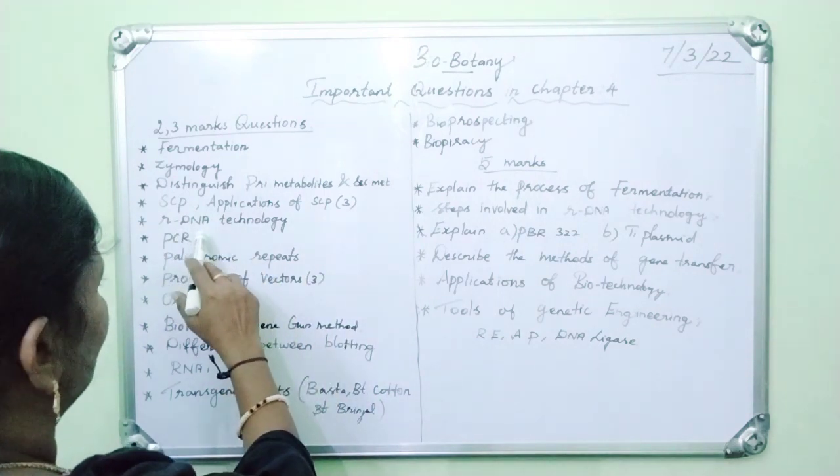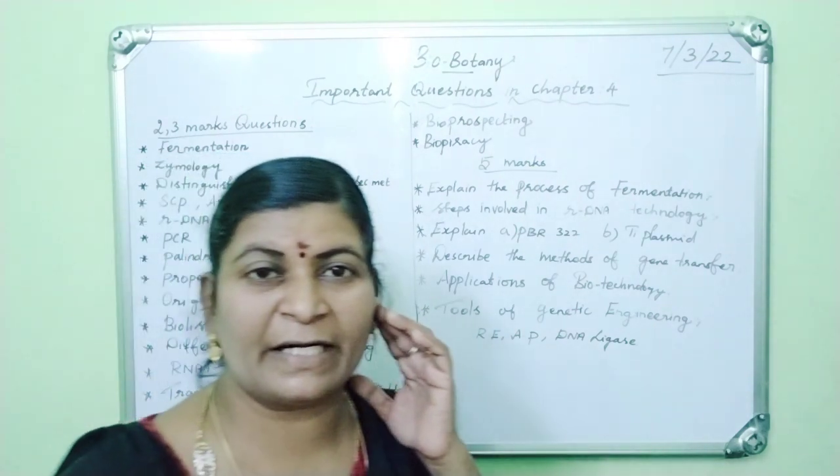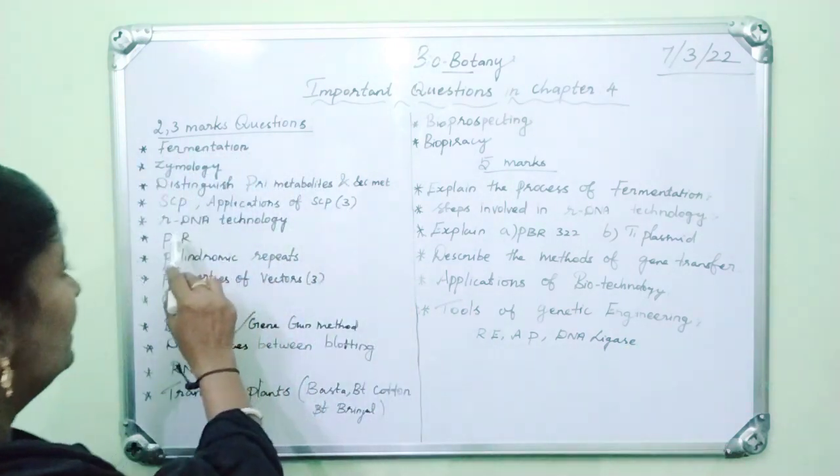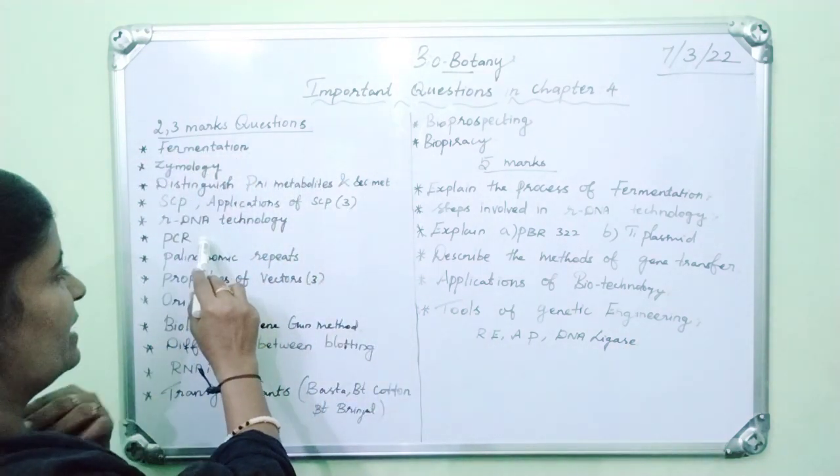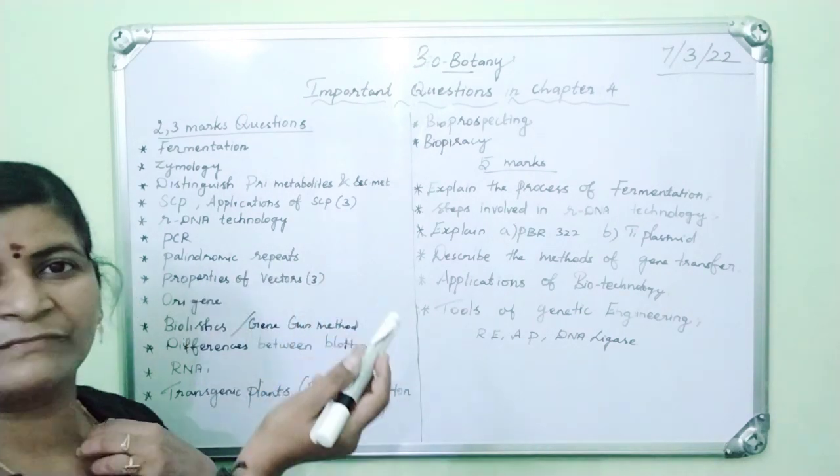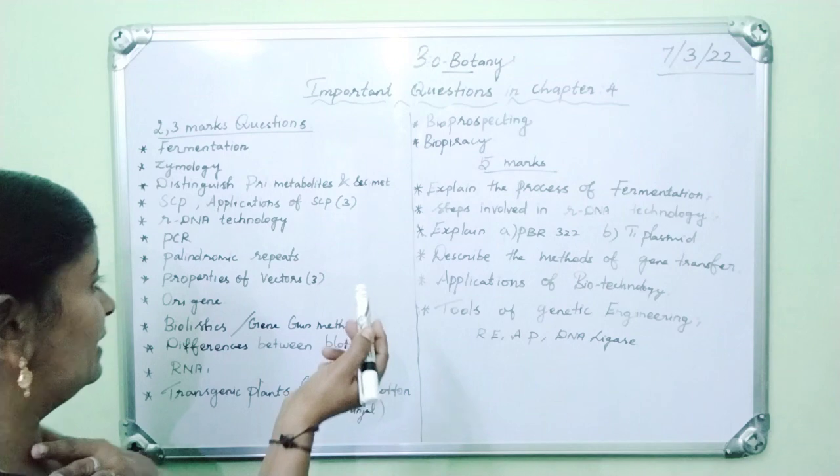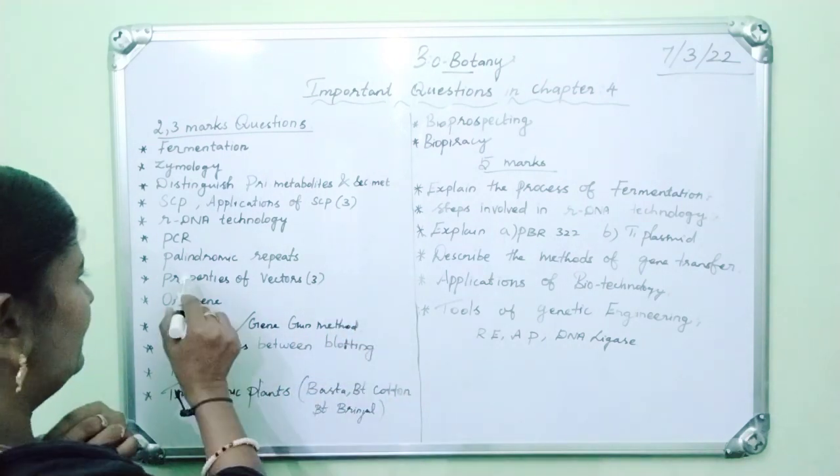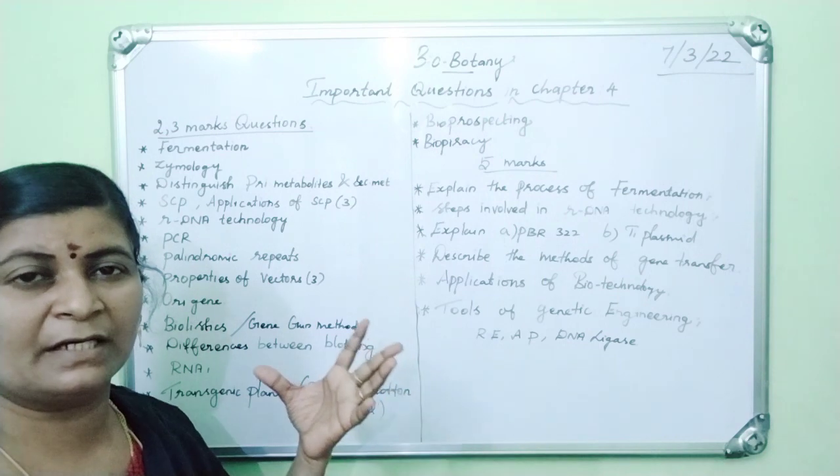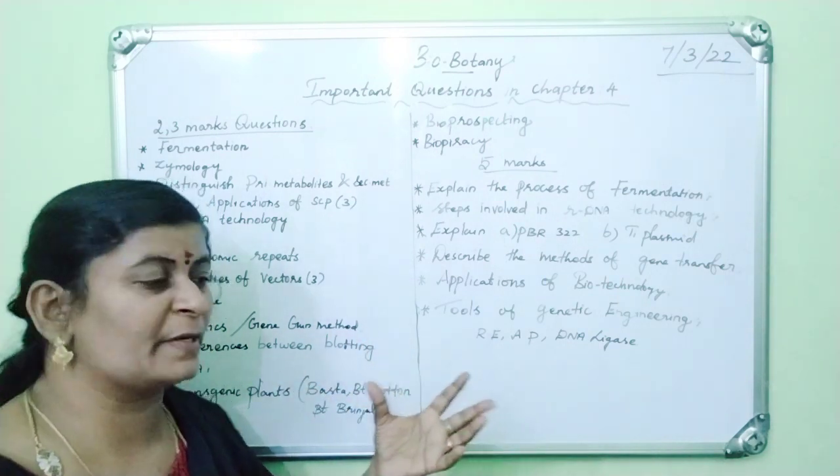Then rDNA technology, recombinant DNA technology, define rDNA technology. Then PCR, polymerase chain reaction, PCR technique. Then what is the use of PCR technique? Like that the questions will come. Then palindromic sequence. Define what is palindromic repeats or what is palindromic sequence.